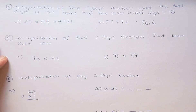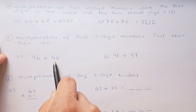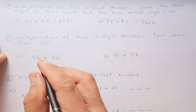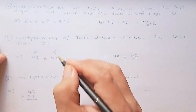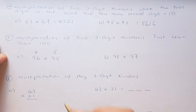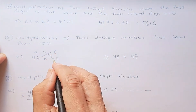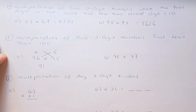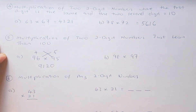Now we multiply 2-digit numbers just less than 100, both in the 90s. For 96 times 95: find how much each is short of 100 — 96 is short by 4, and 95 is short by 5. Cross-subtract: 96 minus 5 equals 91, or 95 minus 4 equals 91. Then multiply the shortfalls: 4 times 5 is 20. The answer is 9,120.